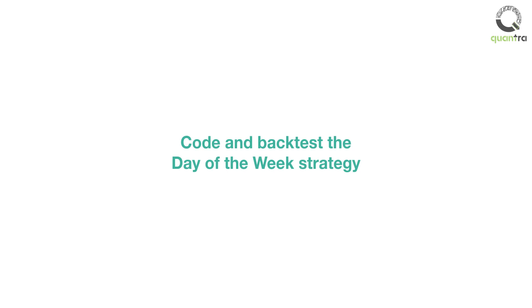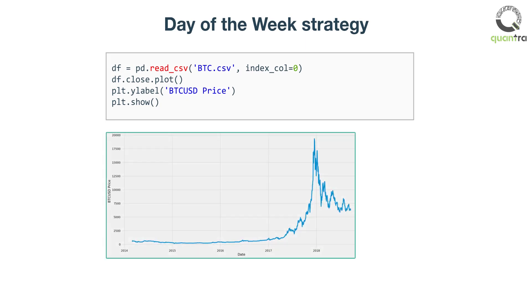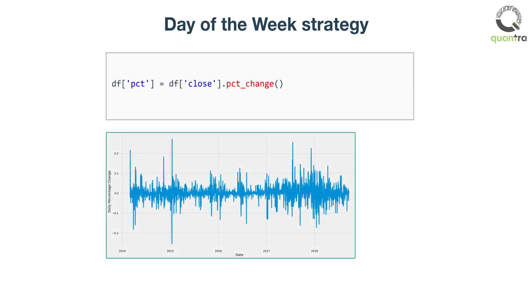Let us code and backtest the day of the week strategy. The first step is to load the Bitcoin data from March 2014 to September 2018 from a CSV file, using the pandas read_csv function. Then, calculate the percentage change on each day using the pct_change function.